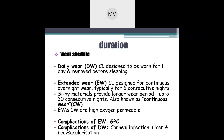For extended wear, the person wears lenses for about six continuous nights without removing them — 24 hours into six nights without removing the lens. Continuous wear is up to 30 consecutive nights without removing the lens. In extended and continuous wear, the Dk value of the material is always higher than that of daily wear.